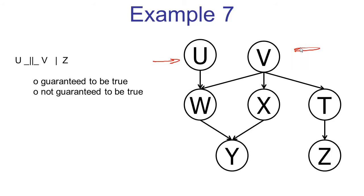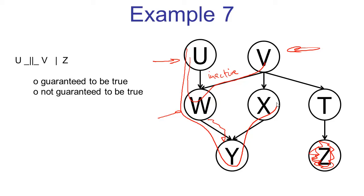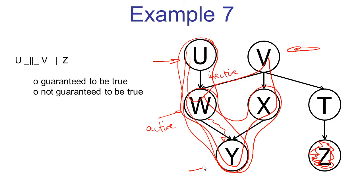We're again asked about u and v, and now z is observed. The first path consists of one triple — a v-structure. The middle node is unobserved and its descendants are all unobserved. So this is an inactive v-structure, making the entire path inactive. Looking at the other path, u, w, y, x, v: the first triple, u, w, y, is an active causal chain with the middle node unobserved. The second triple is a v-structure with the middle node unobserved and no descendants, so it's an inactive triple. Both paths are inactive, so we're guaranteed that the independence is true.